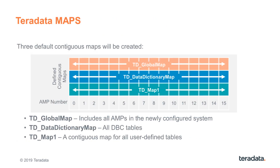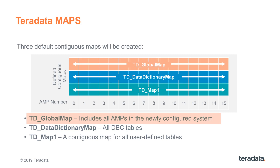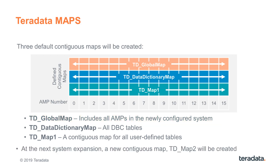When you first move onto 1610, before you've even expanded your system, you're going to see that you have several different maps available to you. TD map one — the purple map, showing the span across AMPs — is where your user tables will be if you chose not to move them during the reconfig. You'll also see a dictionary map, TD data dictionary map, which holds all your DBC tables including things like resource usage and DBQL tables. And there's a third map with internal purposes called TD global map. They're all contiguous maps that cover the same number of AMPs.